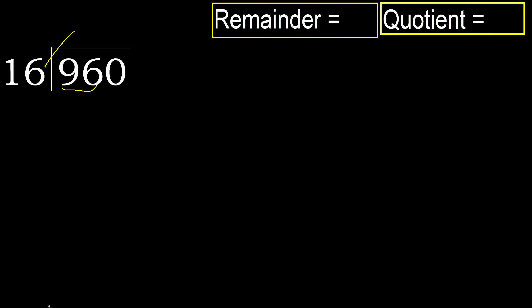16 multiplied by which number is nearest to 96 but not greater? 16 multiplied by 7 is greater, so multiply by 6. 96 is not greater.